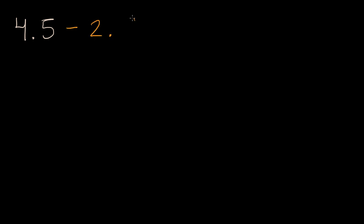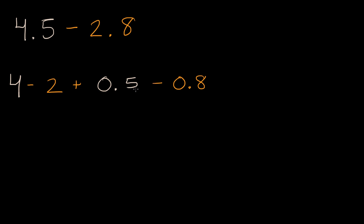Let's do one that's a little more involved: 4.5 minus 2.8. You might do the same thing — think about the ones: four minus two, plus five-tenths minus eight-tenths. But then you get to five-tenths minus eight-tenths, and there's multiple ways to tackle this. How do I take away eight-tenths if I've only got five-tenths here?